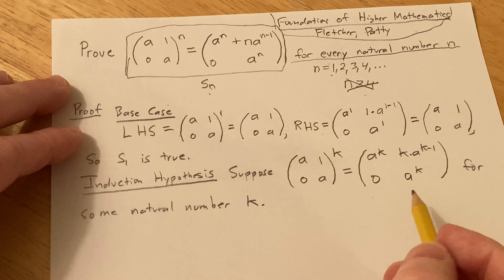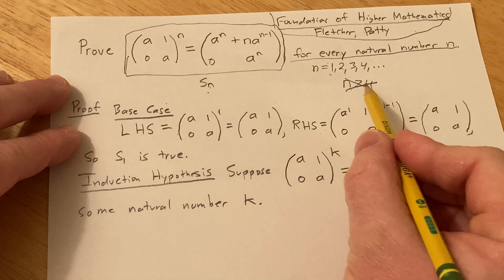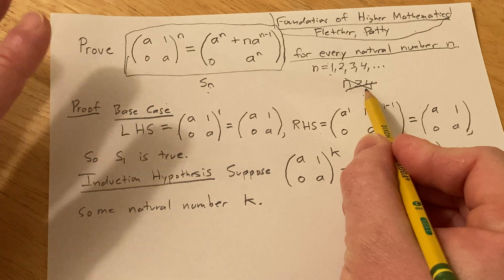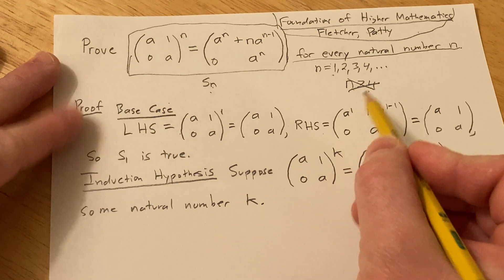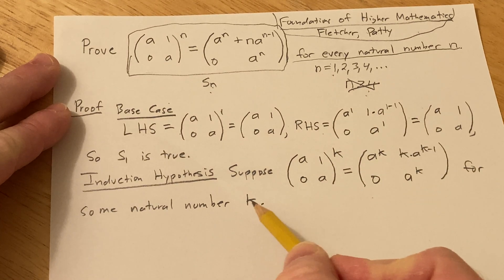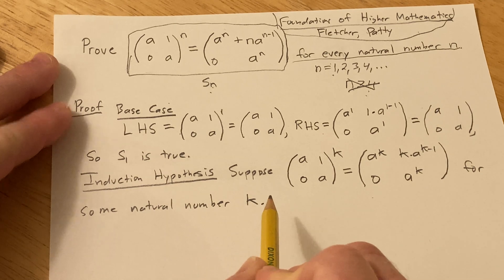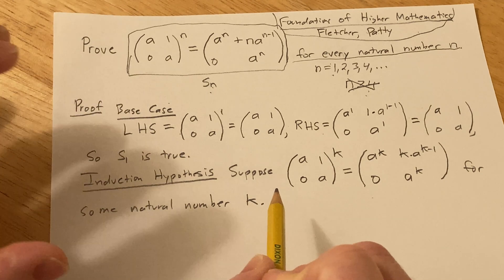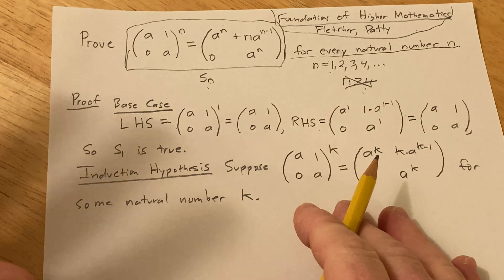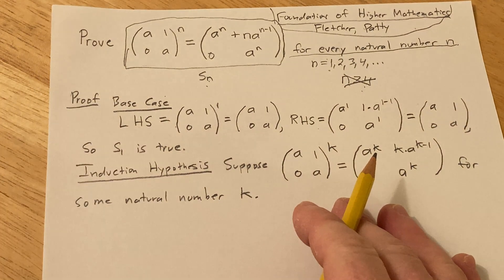I mentioned at the beginning that sometimes you have stuff like n greater than or equal to 4. In those specific proofs, you'd want to specify that here — say 'for some k greater than or equal to 4' — because that's usually crucial and a key element in those proofs. In this proof it doesn't matter; this is a very simple introductory proof of matrices.